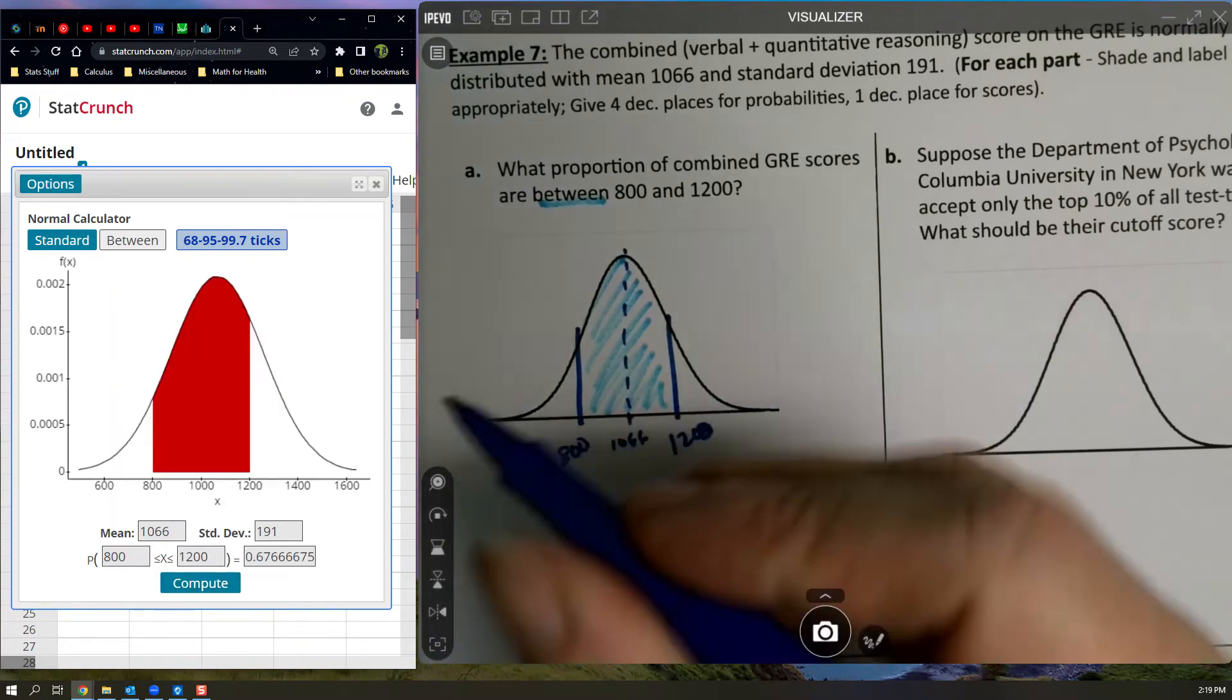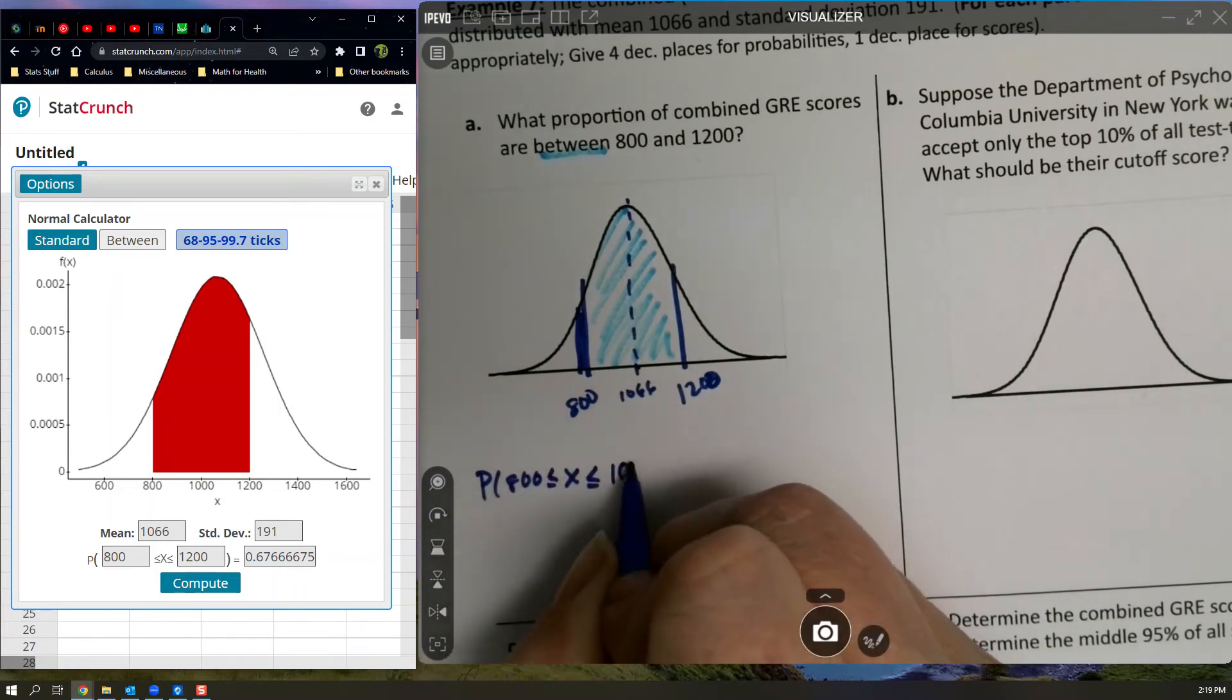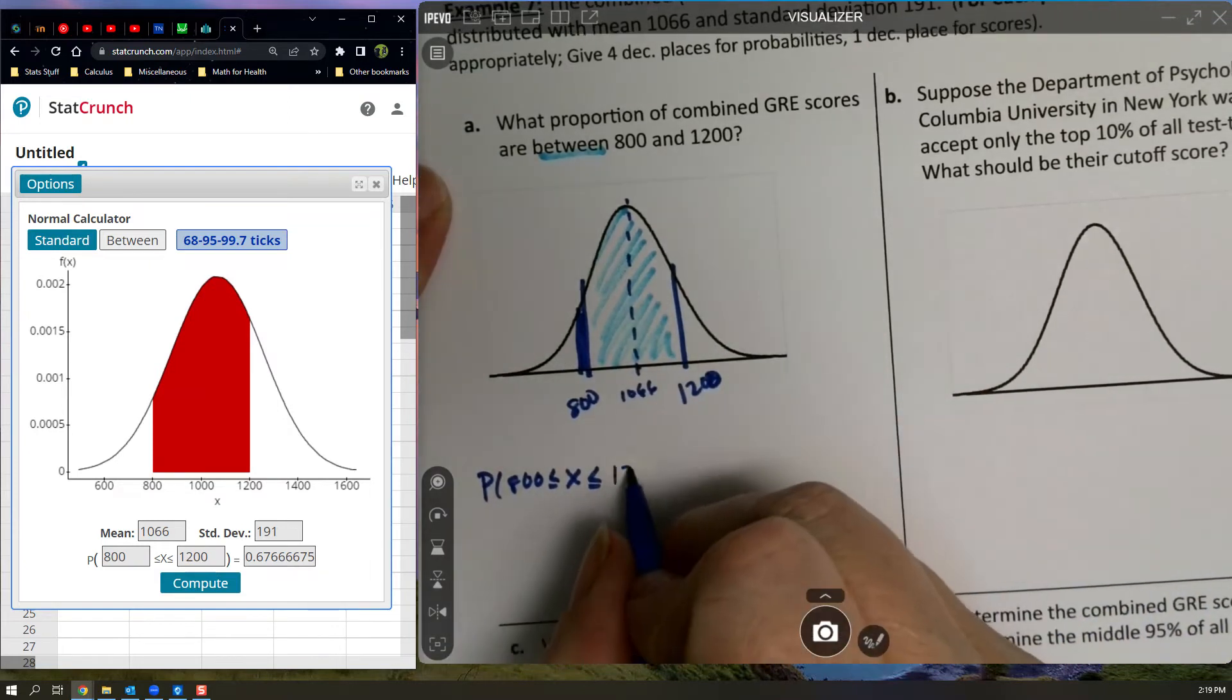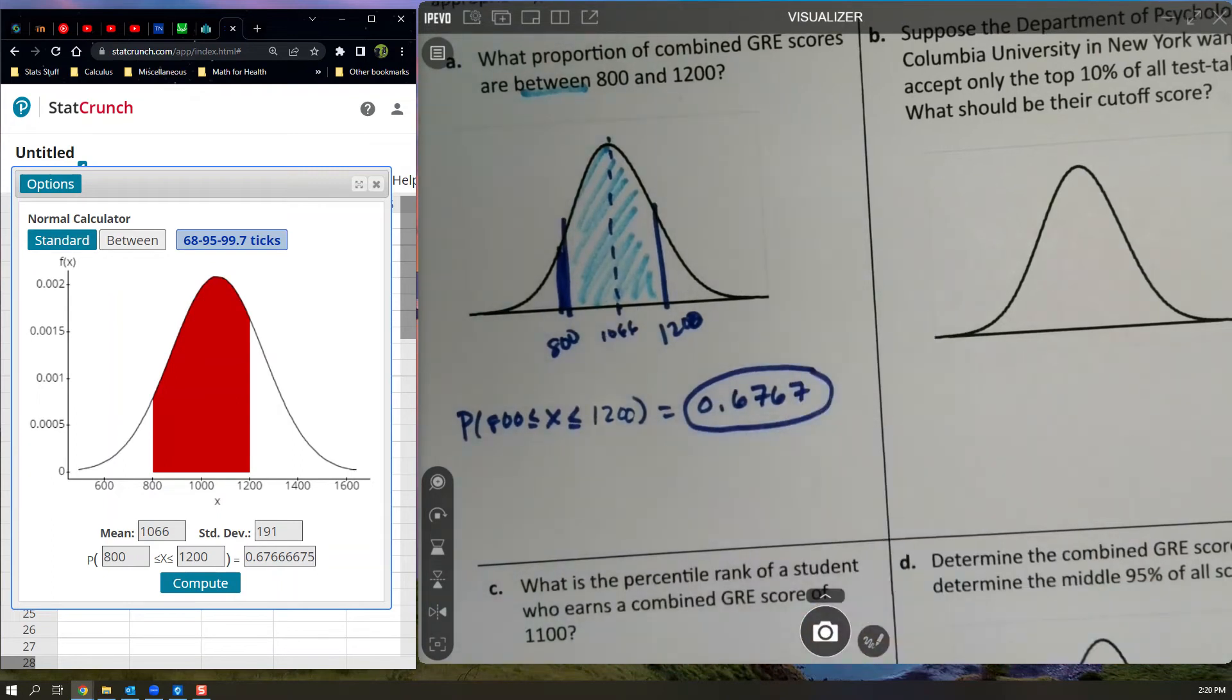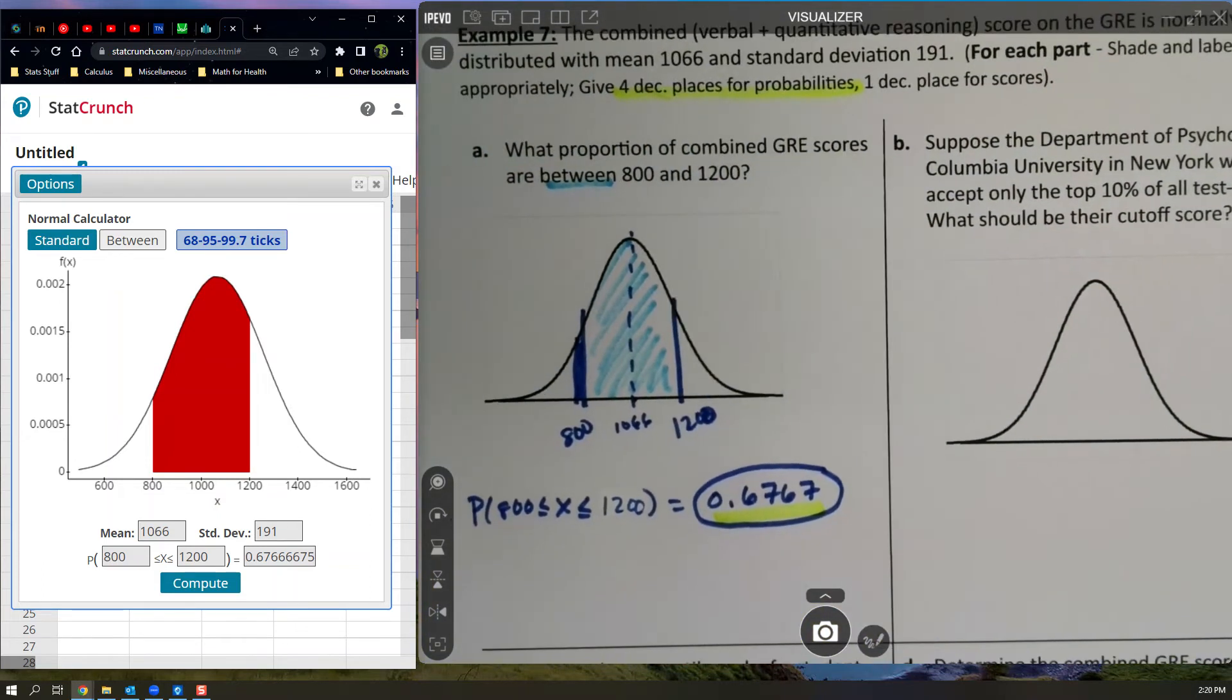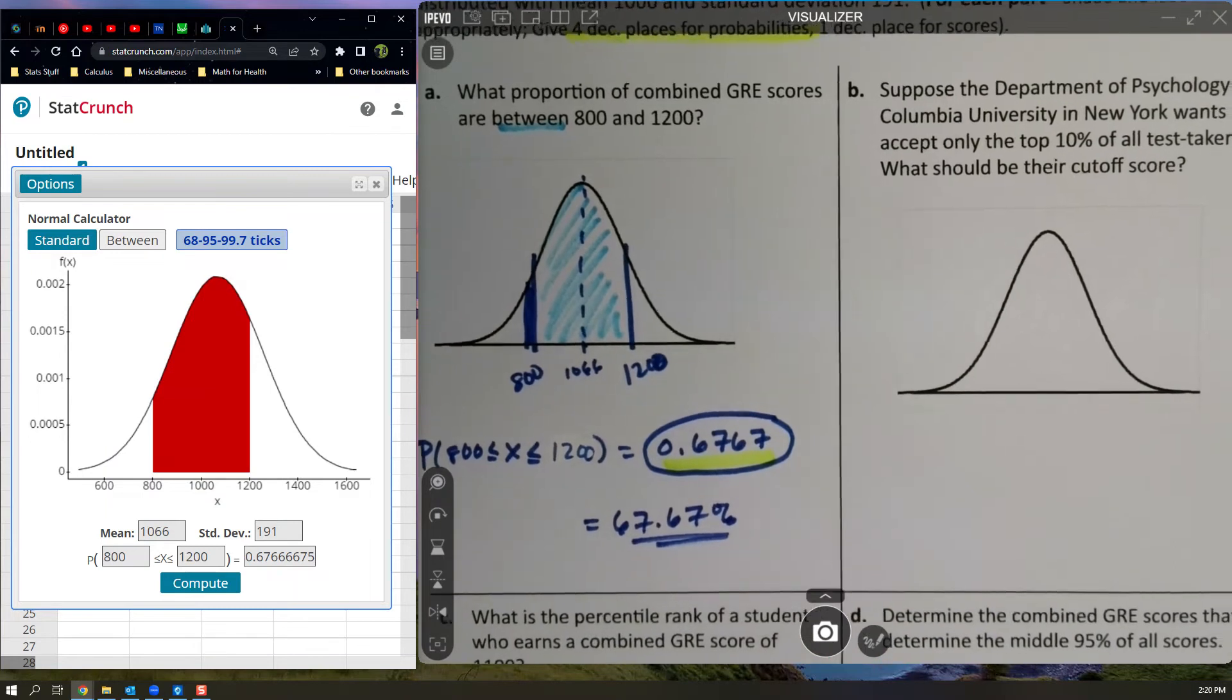And there we have it. My picture's pretty good. The probability that 800 is less than or equal to X which is less than or equal to 1200 equals 0.6767. That's four decimal places for probabilities. So I did that. This is a probability answer. We're good. Now they said proportions. So if you want to change that to 67.67% because that's usually how we talk about proportions, that's fine but it's not strictly necessary as far as I'm concerned.